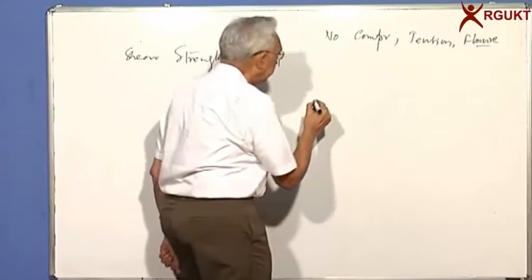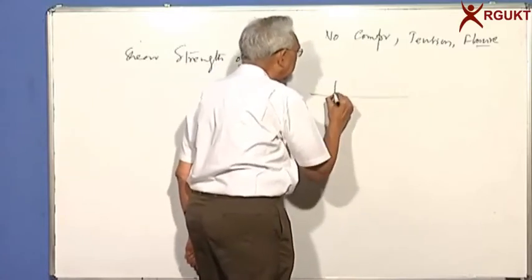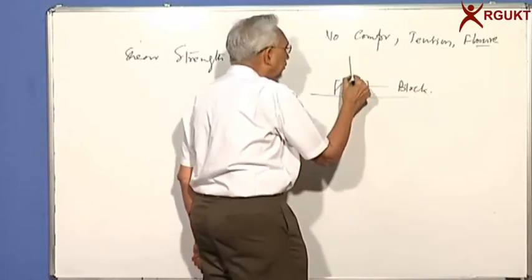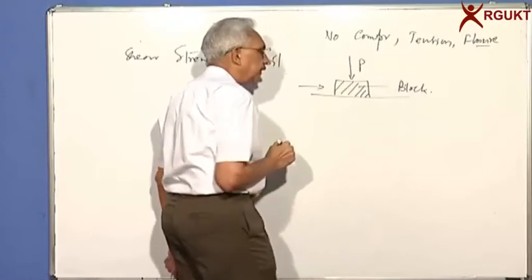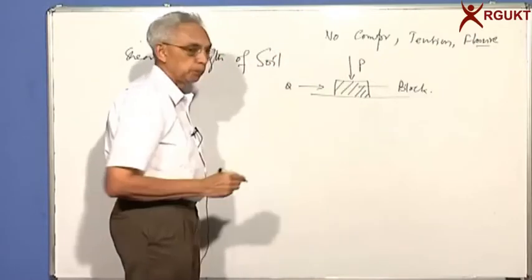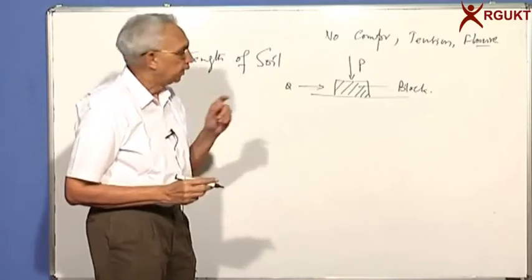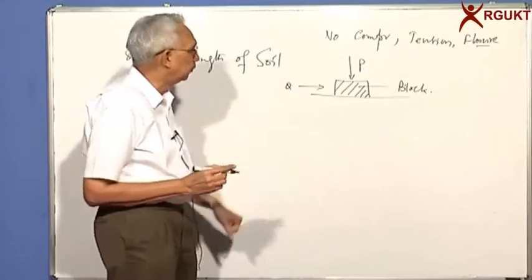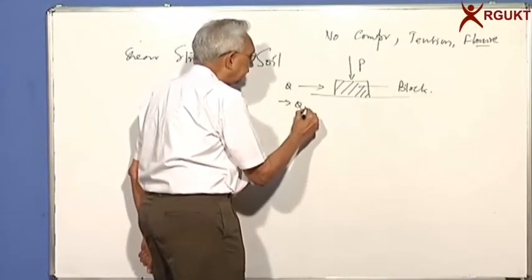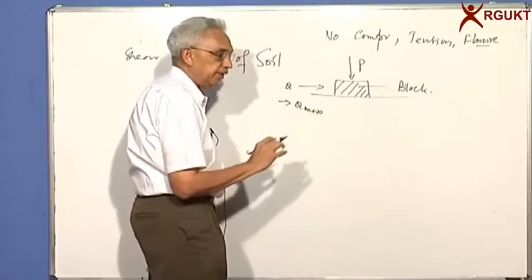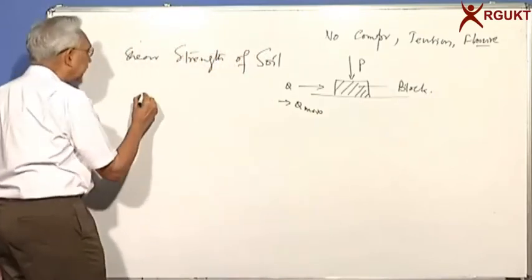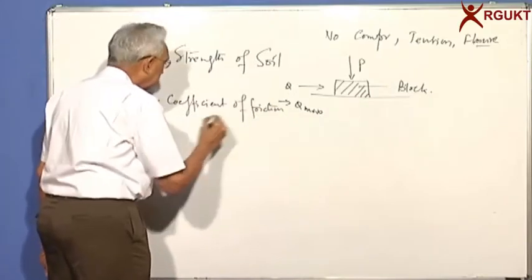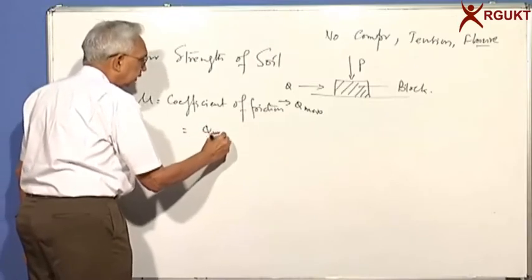To develop the concept of shear, let us go to a simple Newton's experiment. I have a block here, and you put in a normal force P. Now you apply a horizontal force Q. For a given normal force P, as you increase Q, the block will initially resist — it will not move. Once Q reaches Q max, the block will start moving. And that is defined as mu, the coefficient of friction, equal to Q max divided by P.